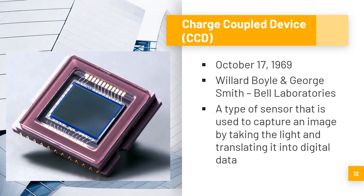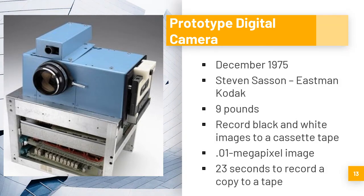The CCD is a type of sensor used to capture an image by taking the light and translating it into digital data. In December 1975, the first recorded attempt at building a prototype digital camera was made by Steven Sasson, an engineer at Eastman Kodak. This camera weighed 9 pounds and could record black and white images to a cassette tape. It was able to capture a 0.01 megapixel image and took 23 seconds to record a copy to the tape.